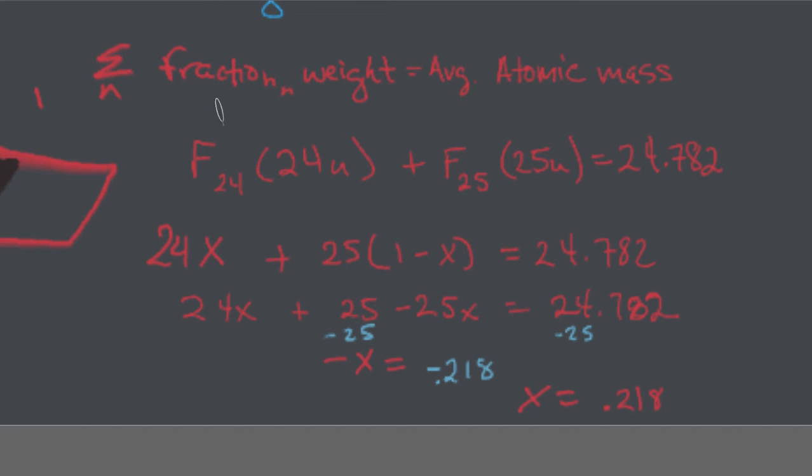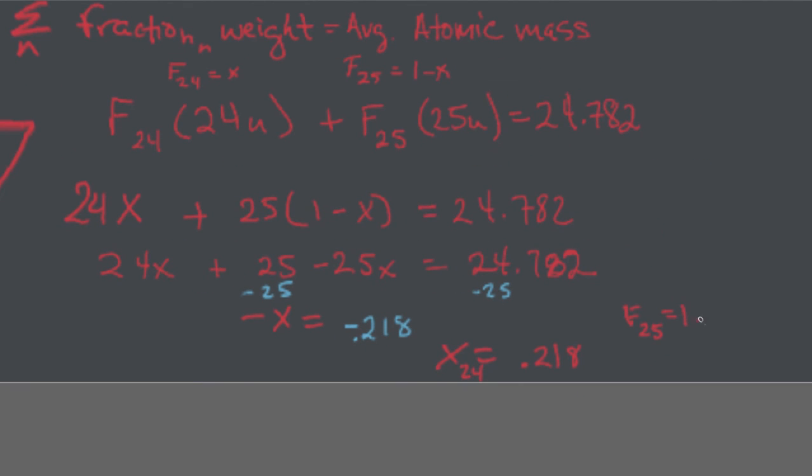You should have technically labeled that. So, you would say, at the beginning, you would say F of 24, let that equal x. Then, as a result, F of 25 would be 1 minus x. So, that when you get to the very end, you know exactly what to do. This is the 24 one. So, to get the 25, you do 1 minus the 0.218. So, that would give you 0.782.